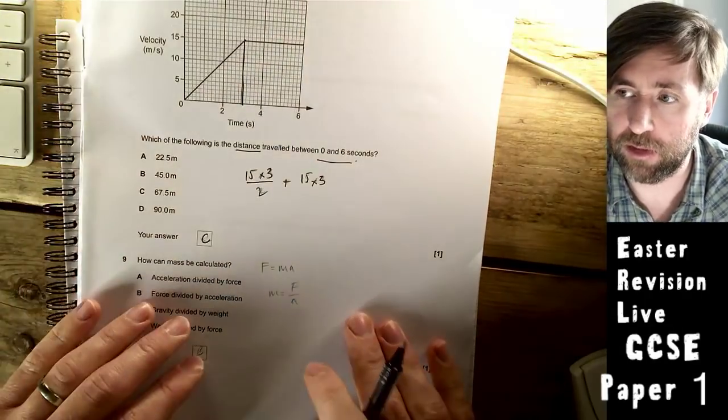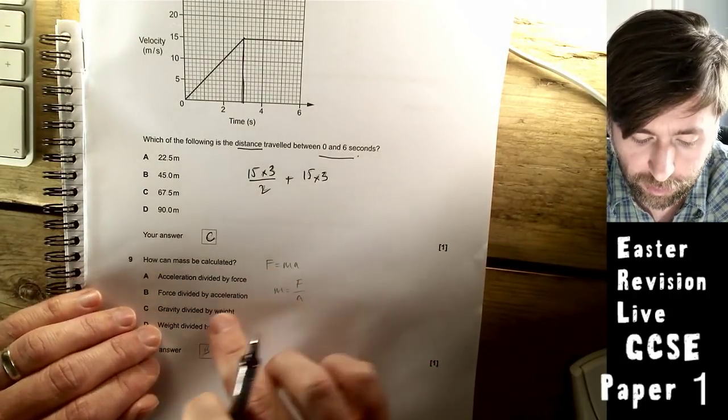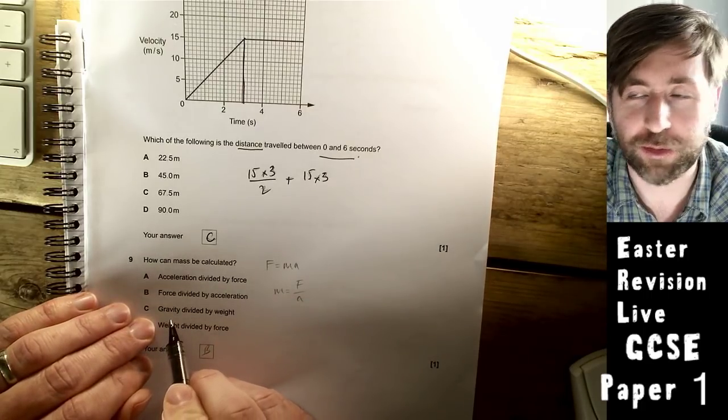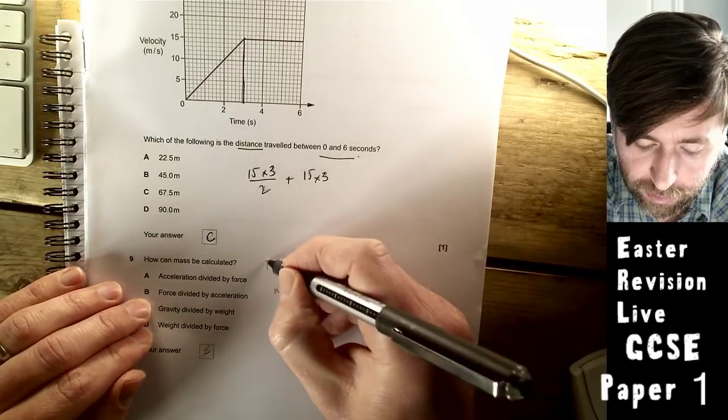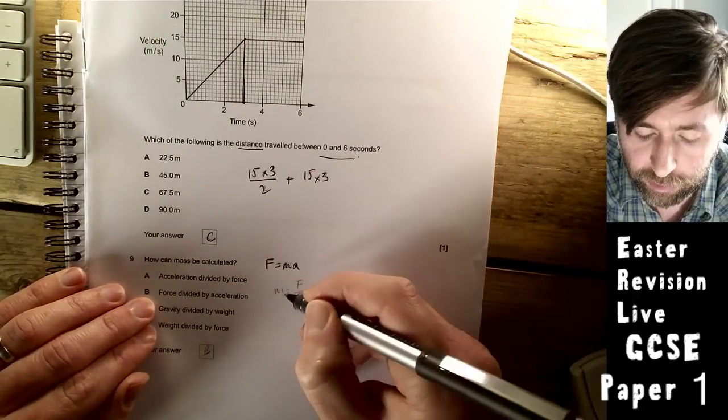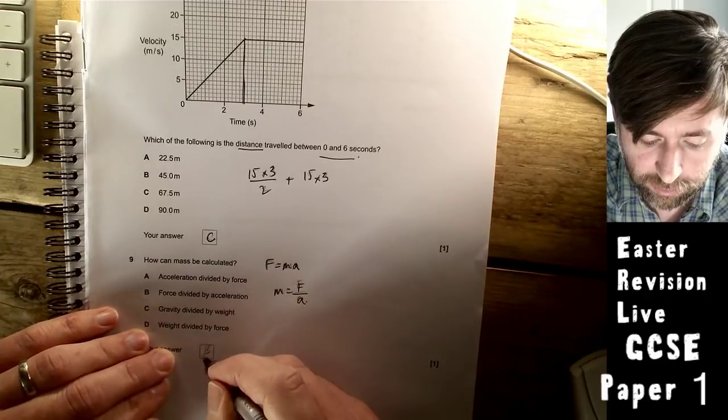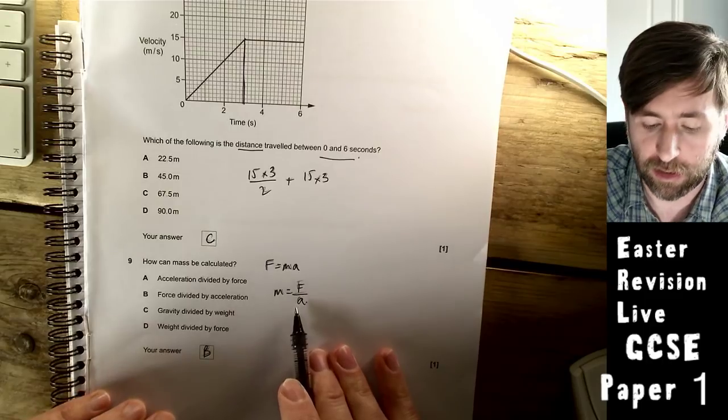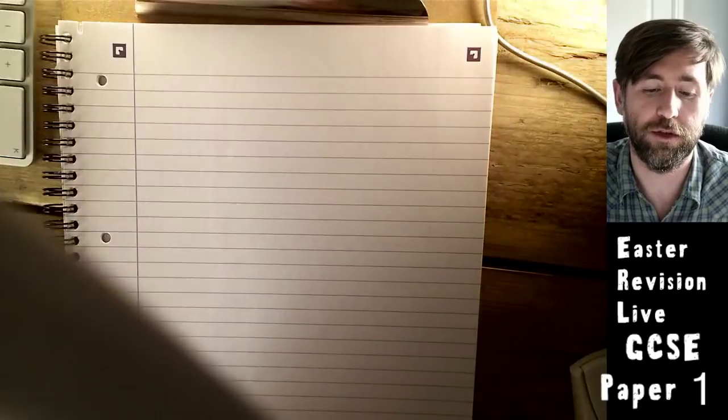How can mass be calculated? We don't say gravity, we say gravitational field strength. Force equals mass times acceleration is the equation. Rearrange for mass: mass is force over acceleration. The one you want is B, force divided by acceleration. That is actually the best definition of mass. Mass is the force per acceleration. Higher mass, more force to accelerate.